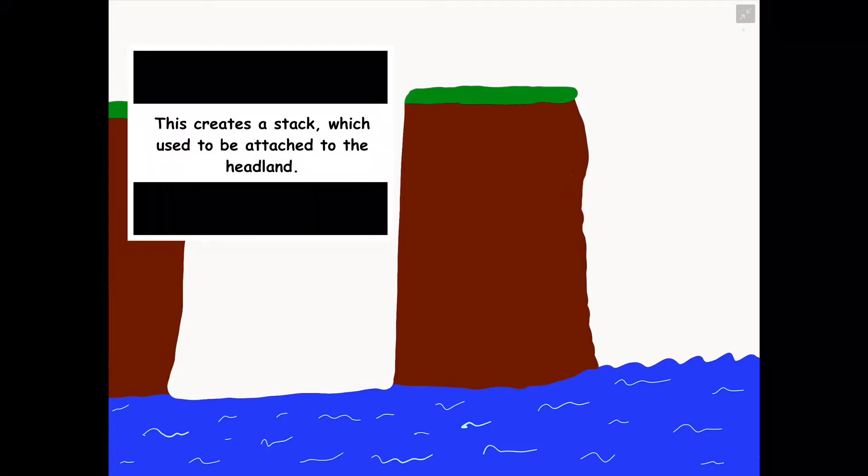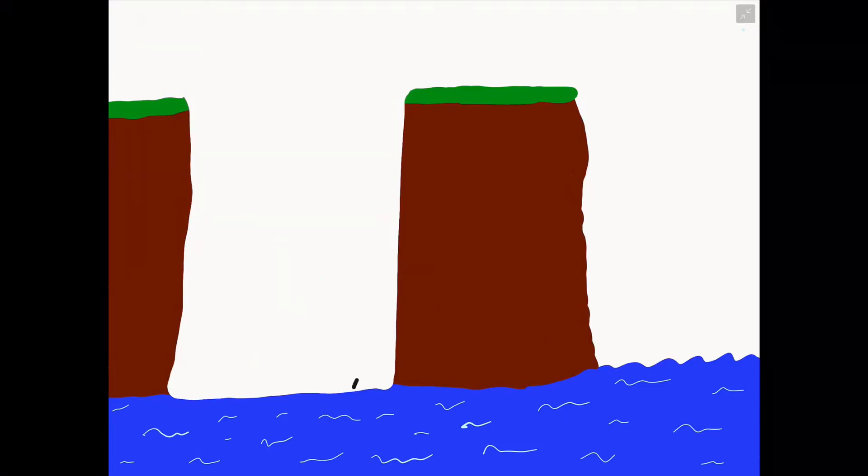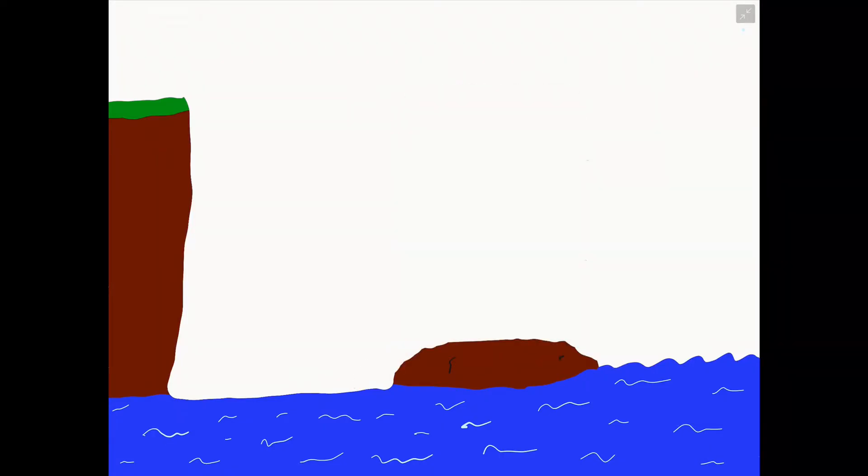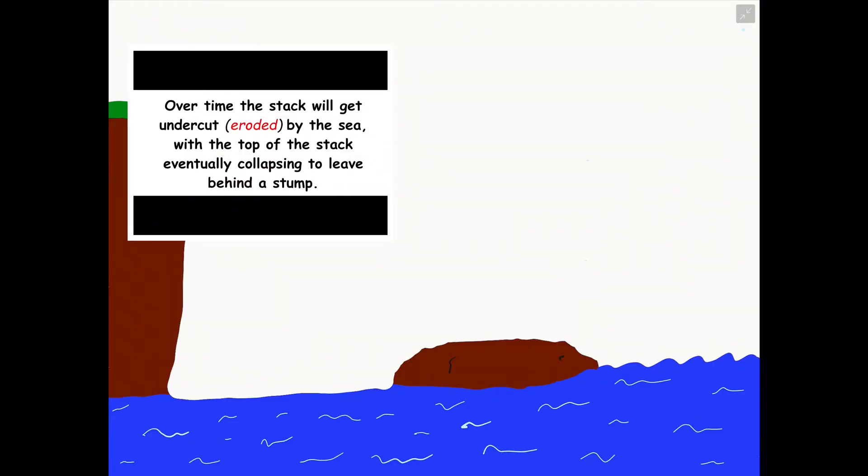Step six is the result of this which is the creation of a stack which used to be attached to the headland and is now a standalone piece of material. Over time this stack will get undercut or eroded further by the sea as it has no protection now as it is exposed and no longer part of the headland. Eventually the stack will collapse and leave behind a stump.